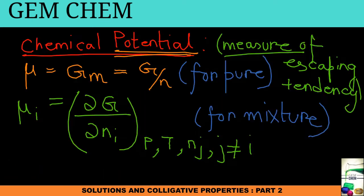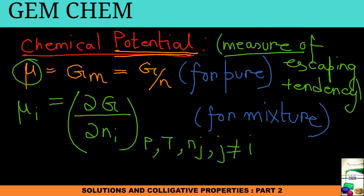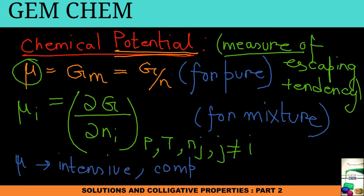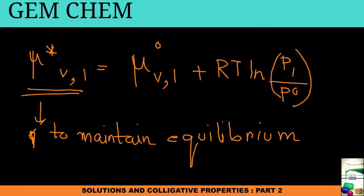The expression for a mixture shows a partial first-order derivative. If we elaborate on mu, it is actually an intensive term — it is component-specific. It is also a thermodynamic property. So it has three characteristics: it is intensive, it is component-specific, and it is a thermodynamic property.